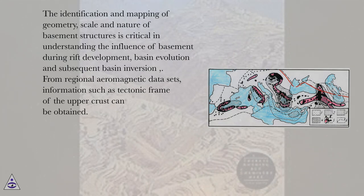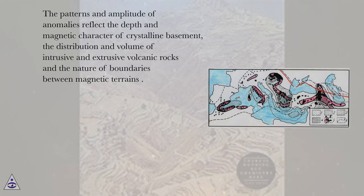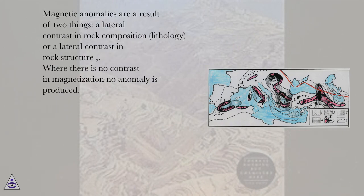From regional aeromagnetic data sets, information such as the tectonic frame of the upper crust can be obtained. The patterns and amplitude of anomalies reflect the depth and magnetic character of crystalline basement, the distribution and volume of intrusive and extrusive volcanic rocks, and the nature of boundaries between magnetic terrains. Magnetic anomalies are a result of two things: a lateral contrast in rock composition or lithology, or a lateral contrast in rock structure.